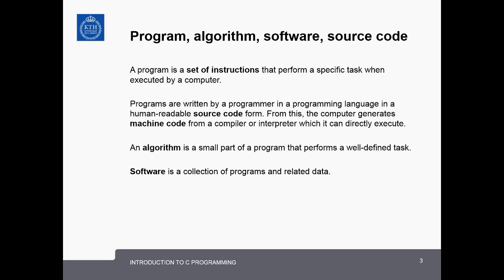When talking about software, it's useful to clarify the difference between a program and algorithm, software, and source code. A program is a set of instructions that performs a specific task when it's executed by a computer. Programs are written by a programmer in a programming language in a human-readable source code form. From this, the computer generates machine code from a compiler or an interpreter, which it can execute directly on its hardware. An algorithm is a small part of a program that performs a well-defined task, and software is a collection of programs and their related data.